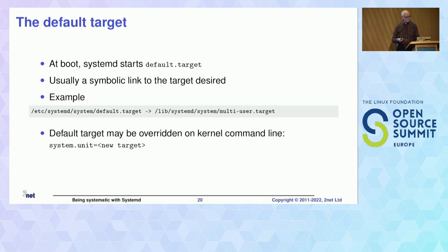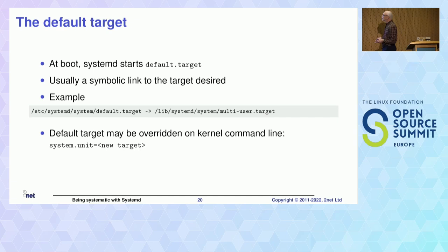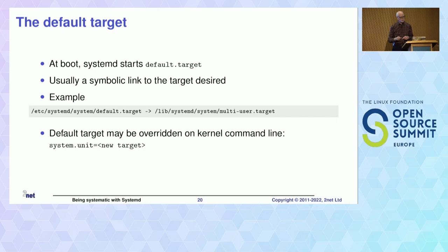The default target is the target launched at boot time. That is the default.target, and it is usually done as a symbolic link to the target you want. In this case the default target points to multi-user.target. You can change that symbolic link, or do the same thing through a systemctl command, or even through the kernel command line.